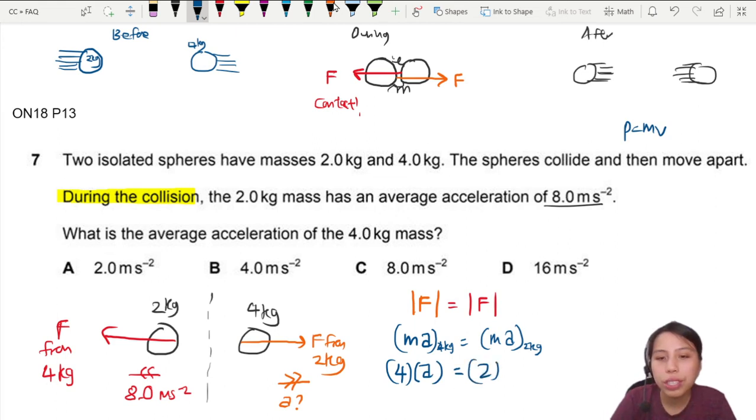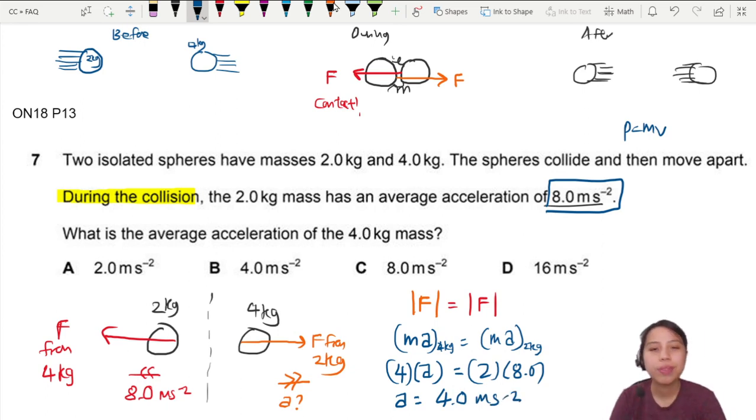Then for the two kilogram is 2 kg times acceleration of 8. So that will be 8.0. So what do we get for acceleration? This will be 8 times 2 divided by 4, 4 meter per second. So this is 4.0 meter per second. So the best choice we can use is B to find our answer.